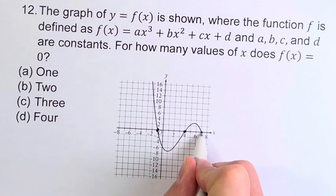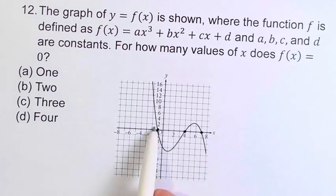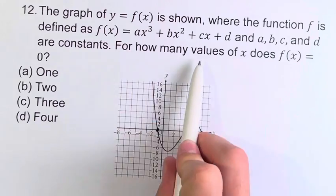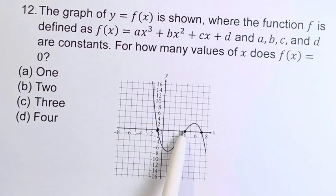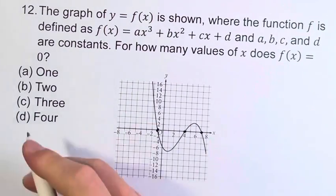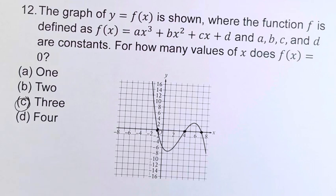And one last time, here, that's three. So we have three intersection points. That means for three different values of x, 1, 2, and 3, f of x equals zero. C, three, is going to be your final answer.